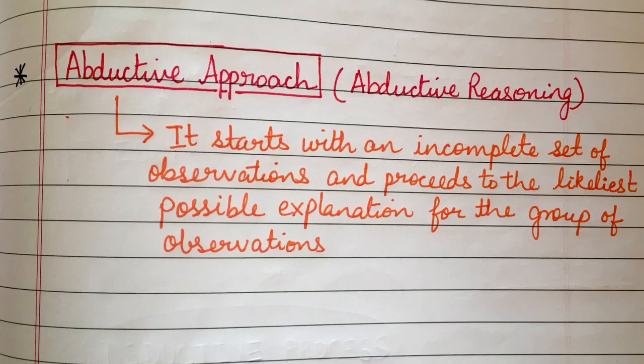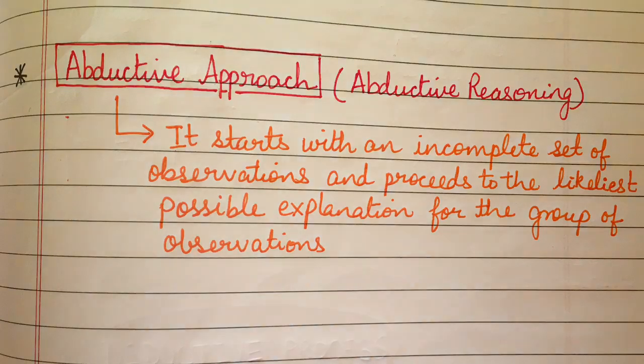In the course of explaining the surprising facts or puzzles, the researcher can combine both numerical and cognitive reasoning — both types of reasoning can be used to explain those surprising facts or puzzles.